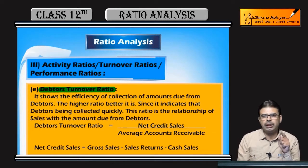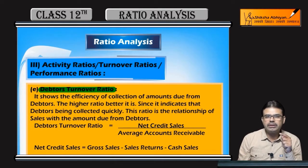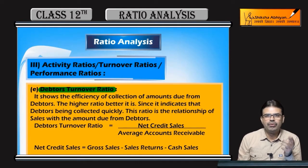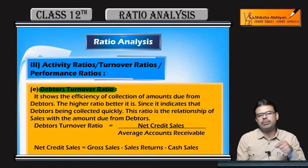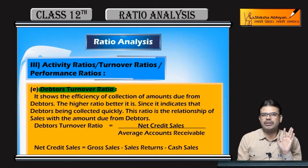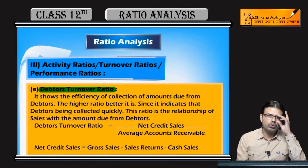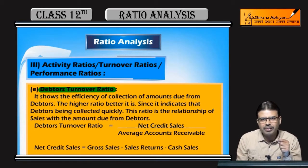How are we collecting the debtors over the years — how much time does it take to collect the money? For example, we collect money such that on average we collect about 2 months — that is 6 times collection. If there is another firm that has 12 times, we have a collection of 12 times.